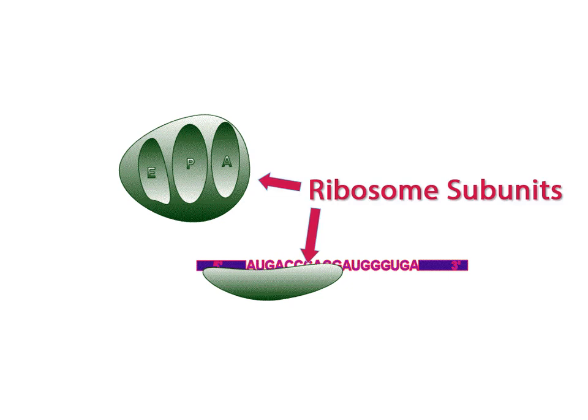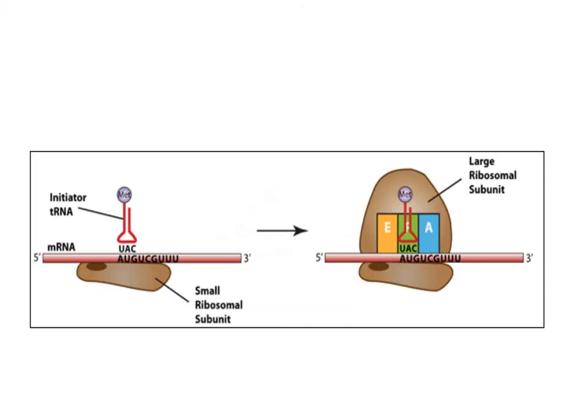Translation begins when the mRNA molecule is trapped by the two subunits that make up the structure of the ribosome. The ribosome proceeds to scan the mRNA molecule until it encounters the start codon AUG. The tRNA molecule, which carries the complementary anticodon UAC, binds to the ribosome and delivers the methionine amino acid.